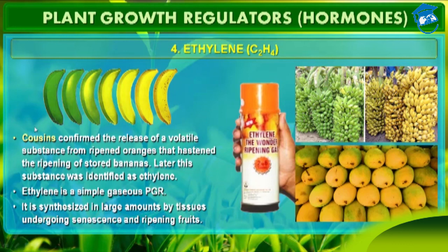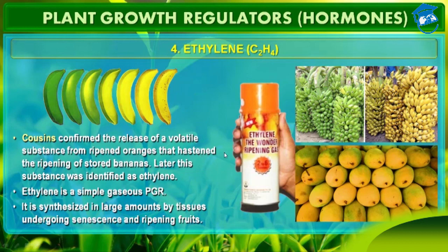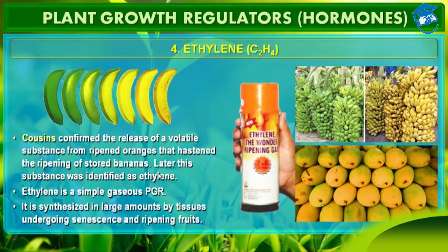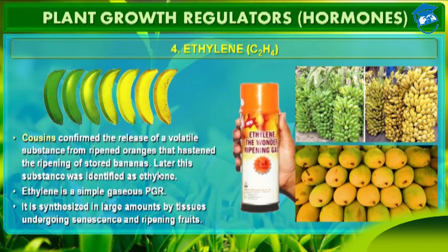For the first time, Cousin was the name of the scientist who confirmed the release of a volatile substance from ripened oranges that hastened the ripening of stored bananas. Later, this substance was identified as ethylene. Ethylene is a wonder ripening gas — with the help of ethylene, you can ripen any fruit. It enhances fruit ripening and is highly effective in this process. It also promotes senescence and abscission of plant organs, especially of leaf and flower.